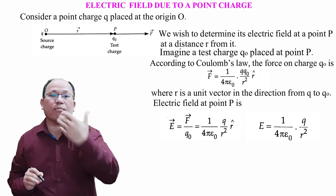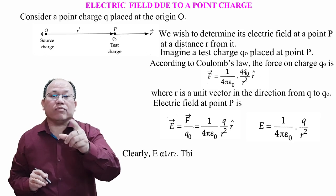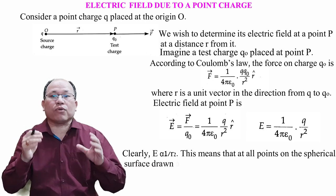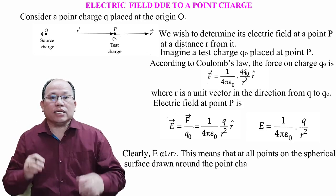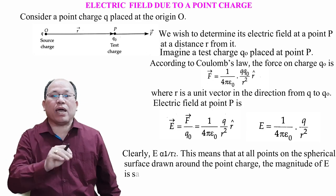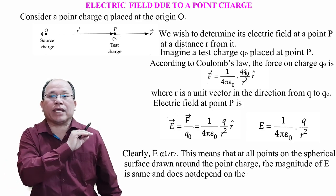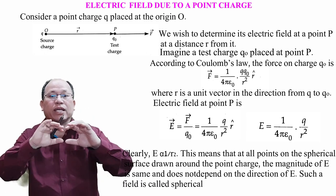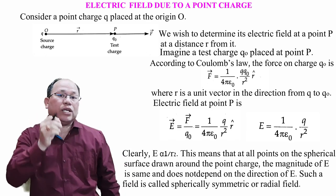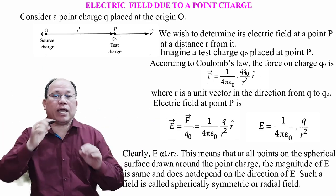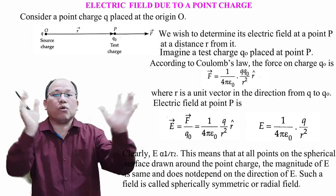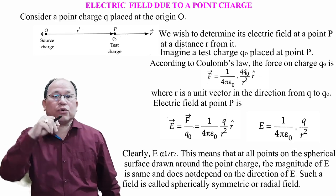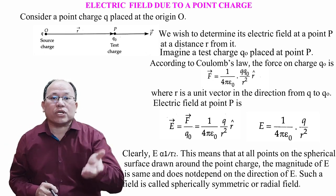We can see clearly that E is inversely proportional to r². This means that at all points on a spherical surface drawn around the point charge, the magnitude of E is the same and does not depend on direction. Such a field is called a spherically symmetric or radial field. The electric field due to a point charge points in all directions, and its magnitude E is the same at any given radius r.